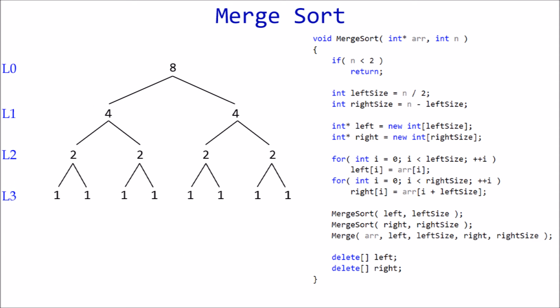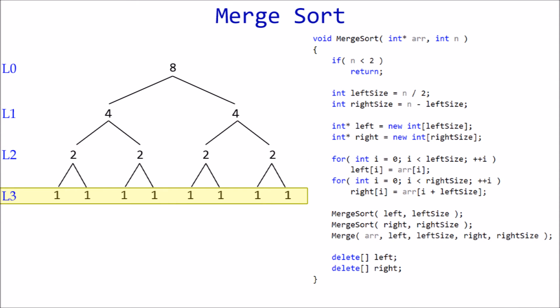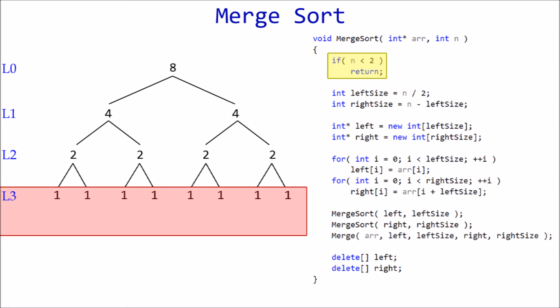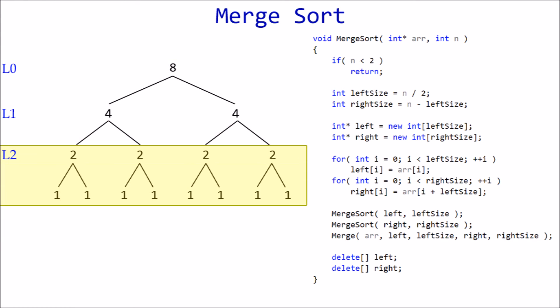So O(n) work per level done log n times gives us O(n log n). Note that log n is the number of levels minus one. For example, assume n equals eight — we have four levels, but log base 2 of eight equals three. That's because the last level returns immediately after the base case, so no merge happens there — merges only happen at the upper levels.